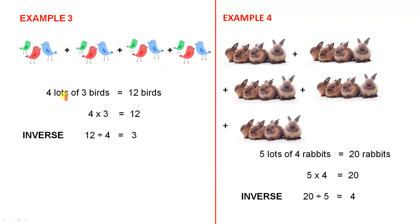Example 3. Four lots of three birds. There's one lot, two lots, three lots, four lots, and each lot or each group contains three birds. That gives you 12 altogether. Mathematically, four threes are 12. If you take the 12, which is the total, and you divide it by the number of groups, you end up with three, which is the number in each group. Division undoes multiplication.